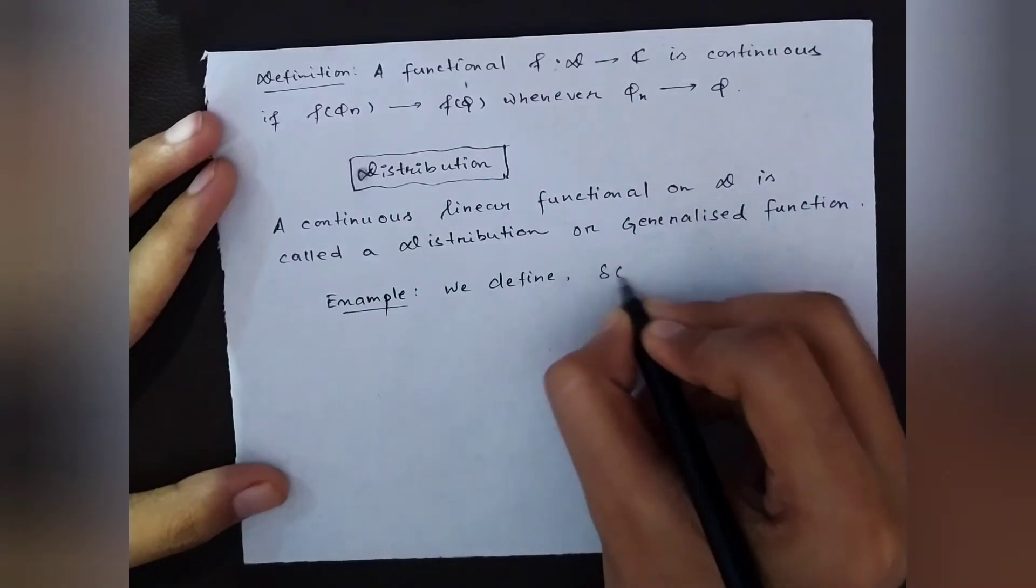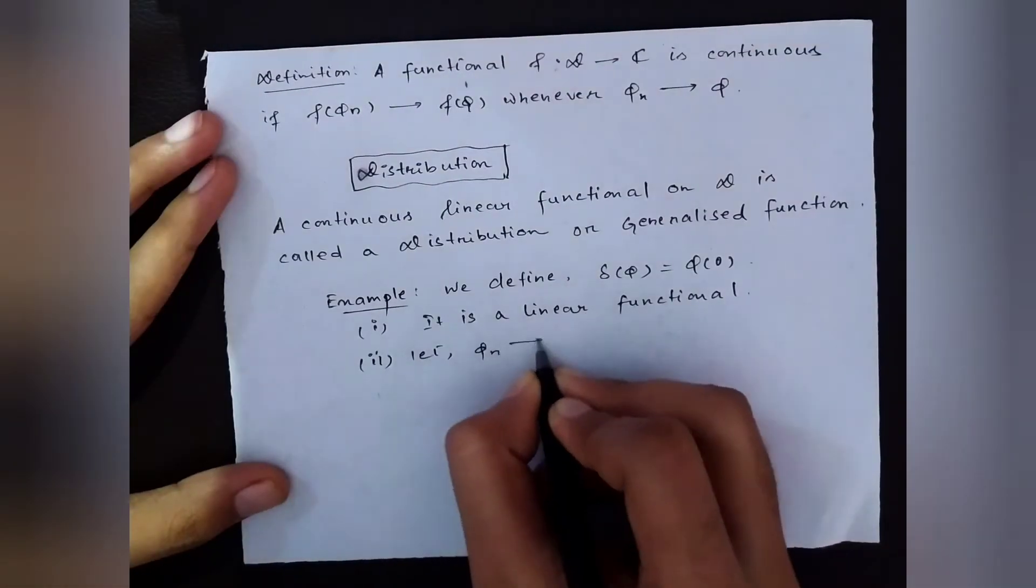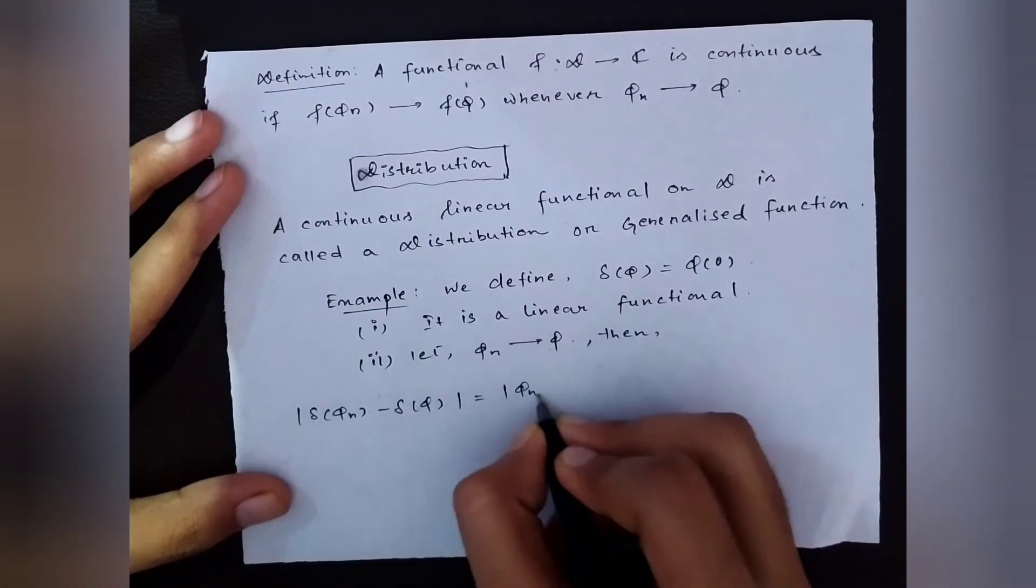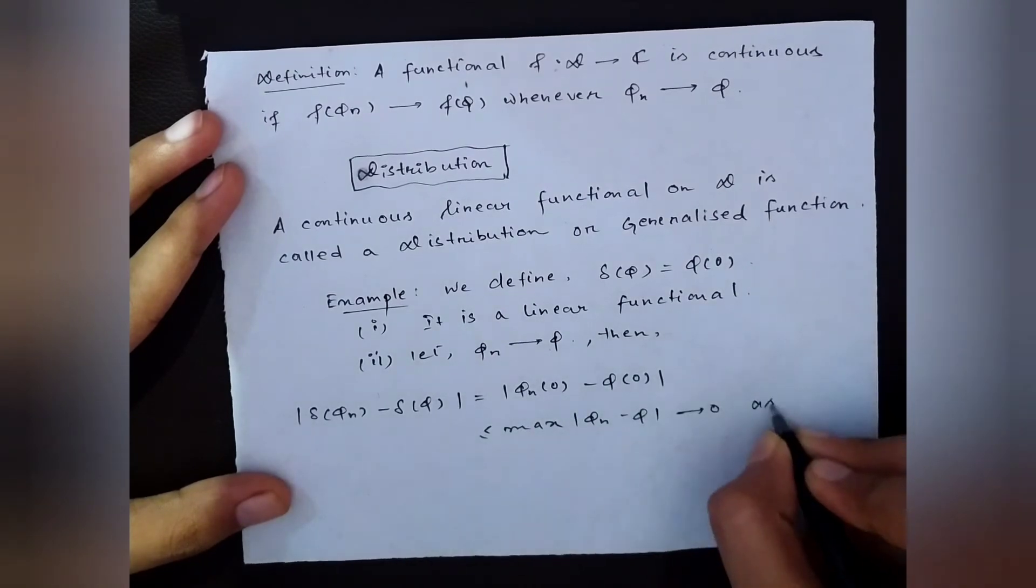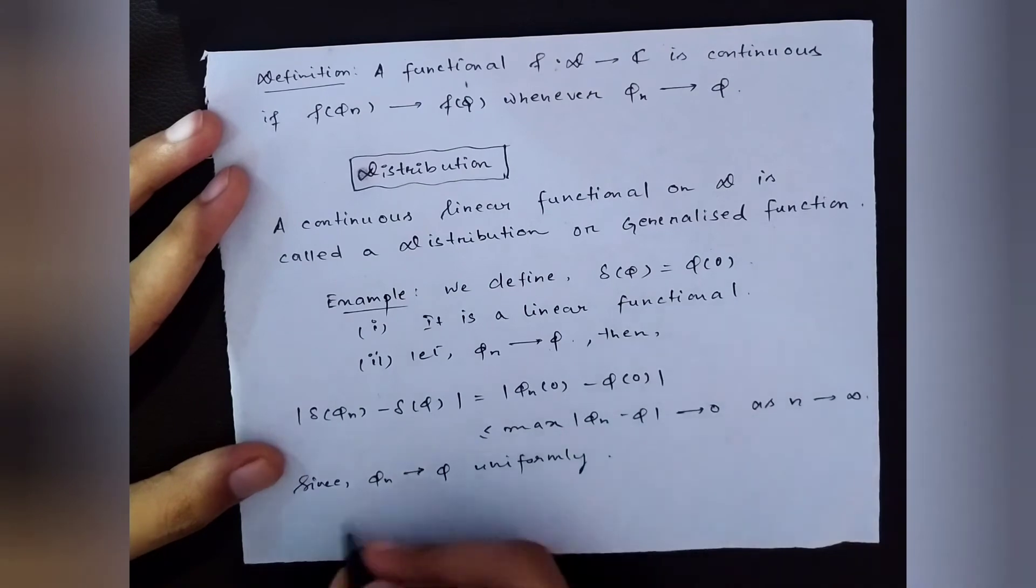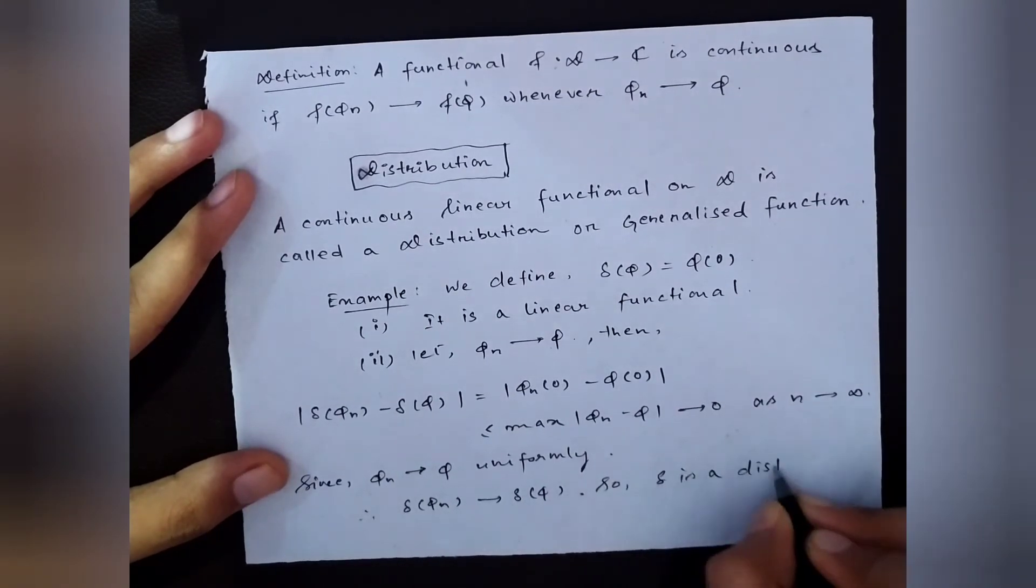As an example, we define δ(φ) = φ(0). We've seen that this is a linear functional. For continuity, we consider a sequence of test functions converging to φ. From the uniform convergence of φ_n, we can show that δ(φ_n) also converges to δ(φ). Hence, the Dirac delta function defined this way makes it a distribution.